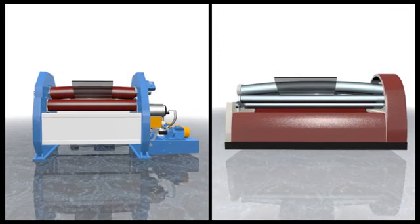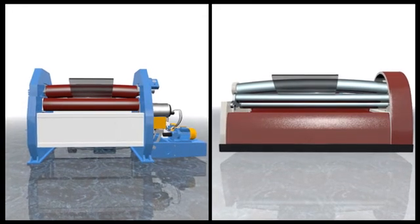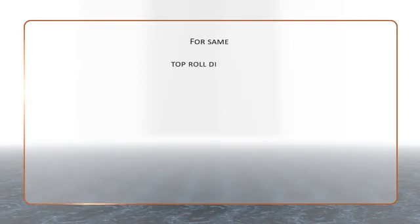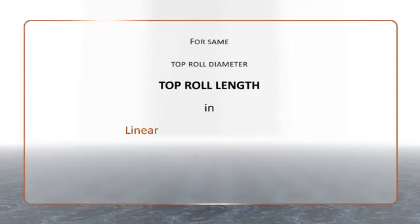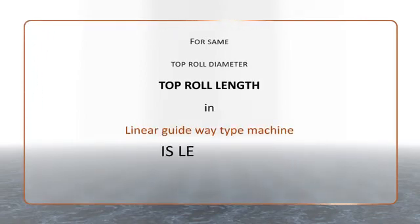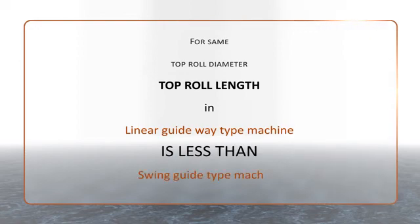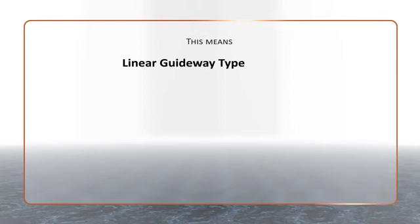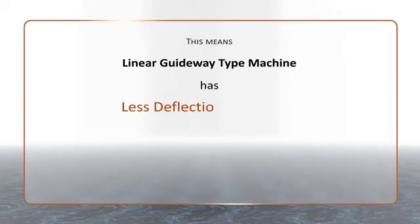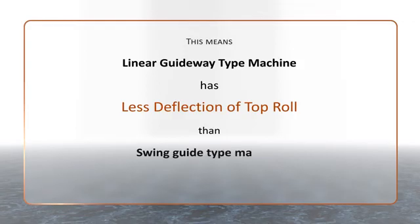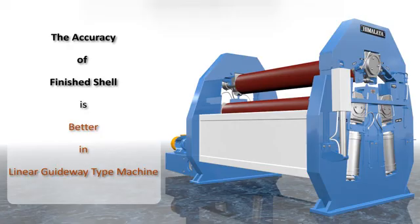As you know, there is always going to be deflection in the top roll under load condition. For same top roll diameter, top roll length in Linear Guide Way Type Machine is less than Swing Guide Type Machine. This means Linear Guide Way Type Machine has less deflection of top roll than Swing Guide Way Type Machine. Hence, the accuracy of finished shell is better in Linear Guide Way Type Machine.